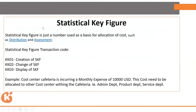We have statistical key figures and activity types, which are prerequisites for calculating overheads in product posting. Statistical key figures are numbers used for allocating costs incurred within a cost center. In distribution and assessment, we use these as the basis for cost allocation.